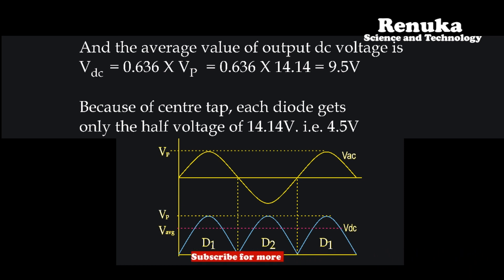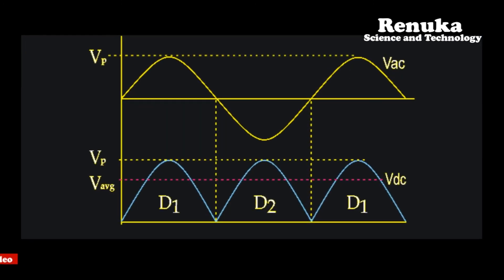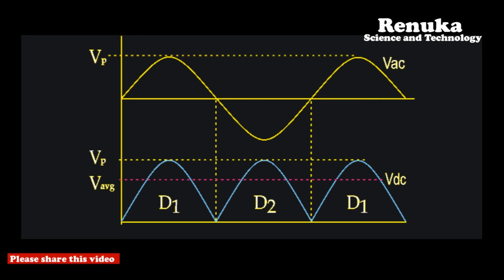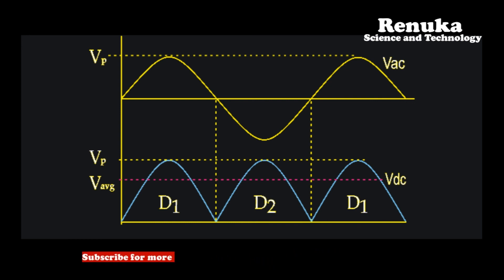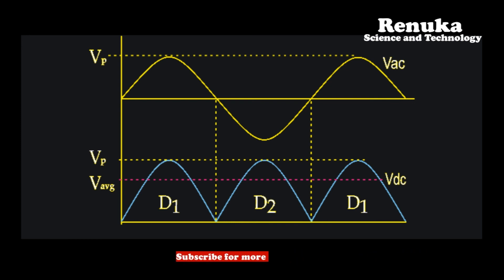Because of the center tap, each diode gets only half the total secondary voltage (7.07 V from 14.14 V). From the wave diagram, during the positive half cycle diode D1 conducts, giving a full half cycle at the output. During the negative half cycle, diode D2 conducts, giving another half cycle with the same current direction through the load resistance. Since positive half cycles appear at the output for both half cycles, this rectifier is called a full wave rectifier.